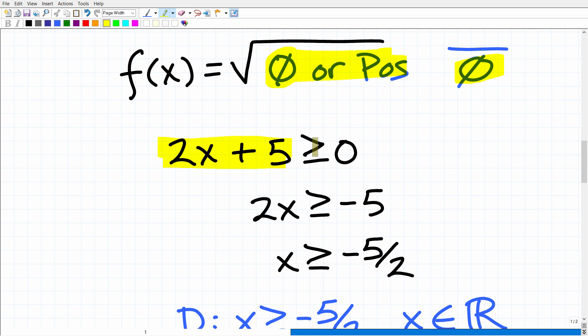So 2x plus 5 can be zero or positive. So we can write an inequality and say, okay, 2x plus 5, where are you greater than zero, which means positive, or equal to zero? Because the square root of zero is zero. We just can't find the square root of negative values in the real number system.